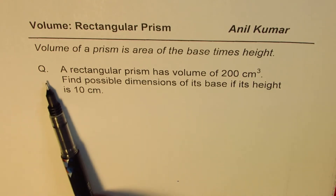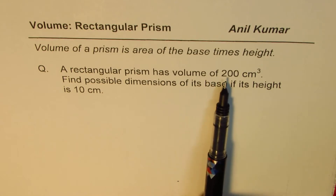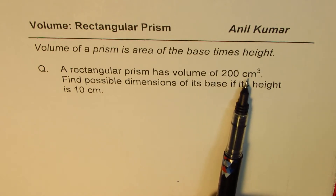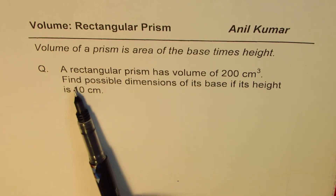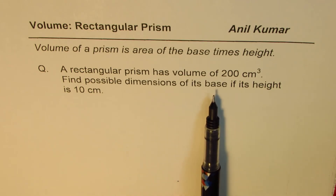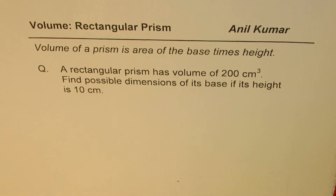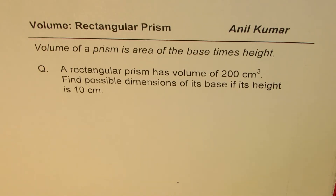The question here is: a rectangular prism has a volume of 200 cm³. How do you find possible dimensions of its base if its height is 10 cm? You can always pause the video, answer the question, and then look into my suggestions.